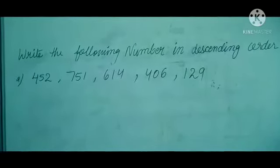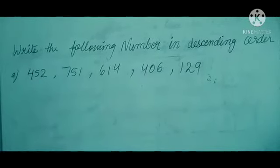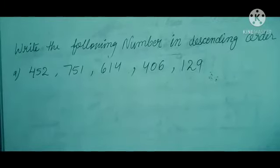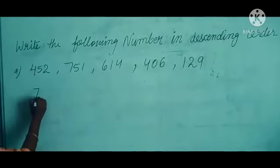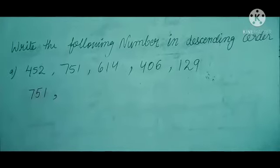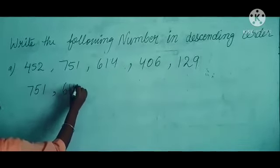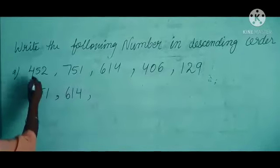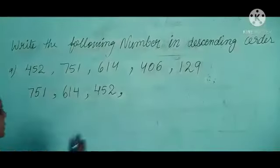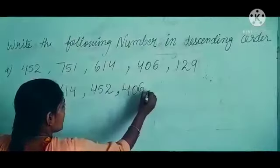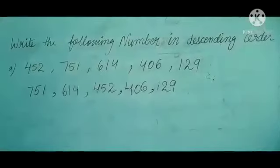Next question is: write the following numbers in descending order. In descending order, we always write from the greatest to the smallest number. First we see which number is greatest — that is 751. After 751, the next smallest is 640. After that is 452. After that is 406. And the smallest number is 129. Like this, you will do descending order.